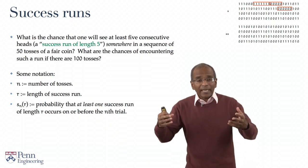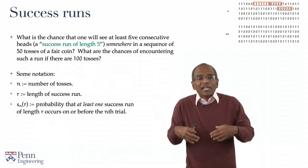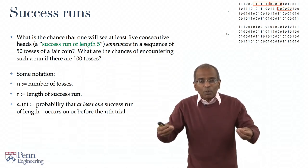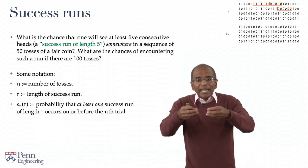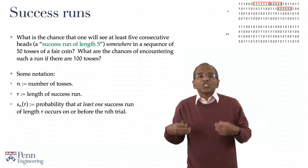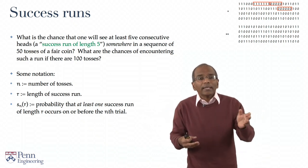We will say s sub n of r, or slightly more casually, s_n(r), to stand for the probability that in n tosses of a coin, one observes a success run of length at least r somewhere in this sequence.